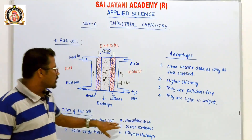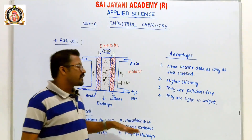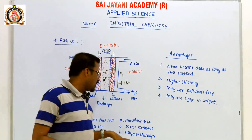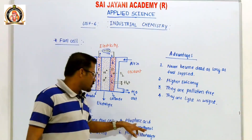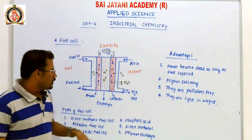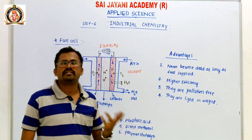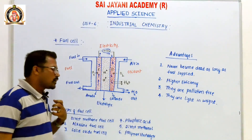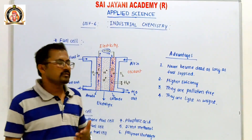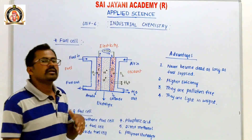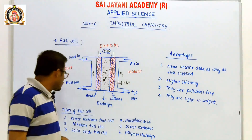The fourth type is the phosphoric acid fuel cell. The fifth type is the polymer electrolyte fuel cell, in which polymer electrolyte is used. So on the basis of the chemical used as the fuel, the fuel cell is named accordingly. These are the main types of fuel cells.